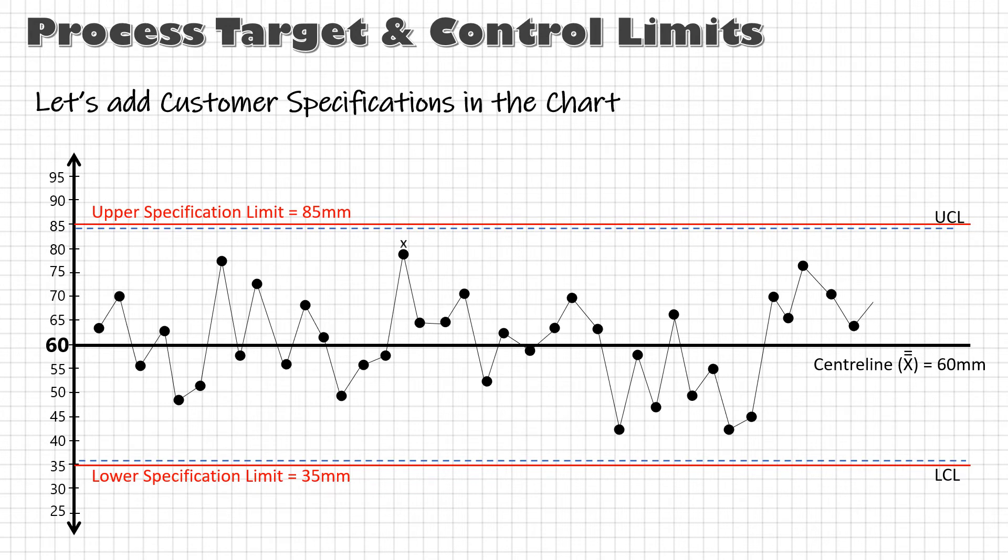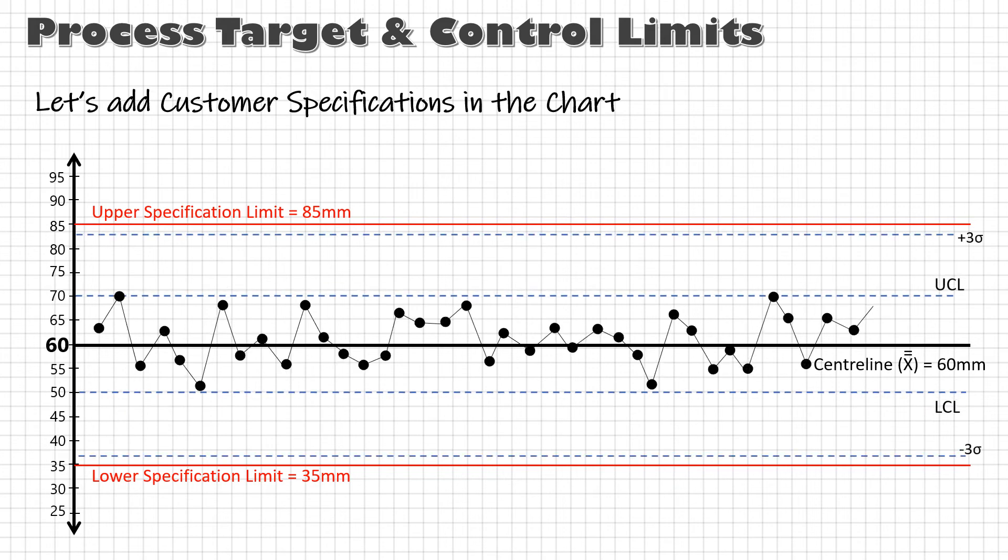Because in X bar chart, we are plotting averages. That means individual values will be both above and below the average value. If specification limits coincide with the plus minus three sigma of the process, we can be sure that 99.7% of the parts will be okay. But in the long run, this percentage will drop to 93.3. Remember?